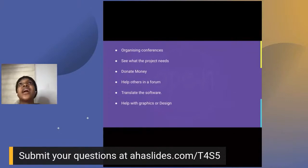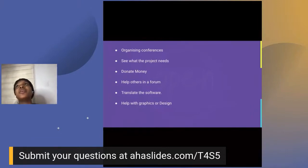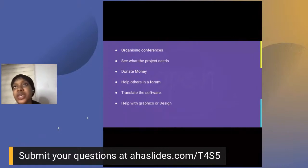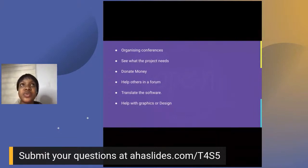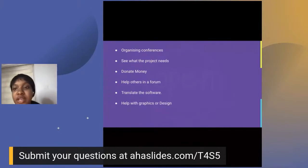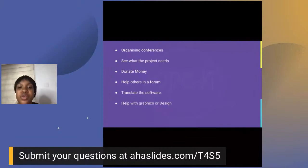Another very important way is translating the software. Mautic is being used by people from different parts of the world — people who speak English and people who don't, people who speak multiple languages. Translating the software to your own language, so that people who use Mautic in that language can have it in their local language, is a way to contribute to open source. You don't necessarily need to write code — you're just translating, either using a software translation tool or doing it yourself if you write your local language well.